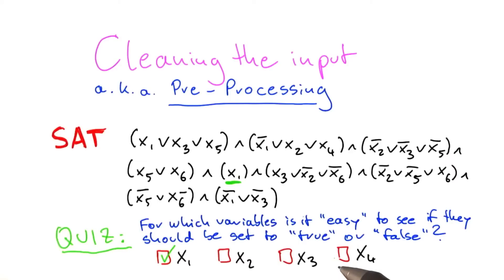So what's the other variable where I think it's rather easy to see if it should be set to true or false? Well, x2, if you look around it, so here's x2, here's not x2, not x2, not x2. So it appears a couple of times. It appears as x2 and as not x2. So without trying any other assignments, I think it's not that easy to see. x3 is the same.